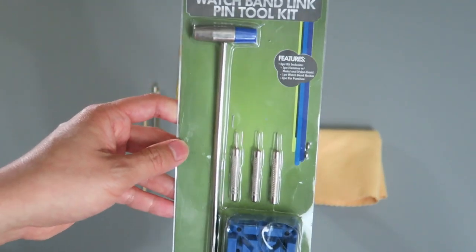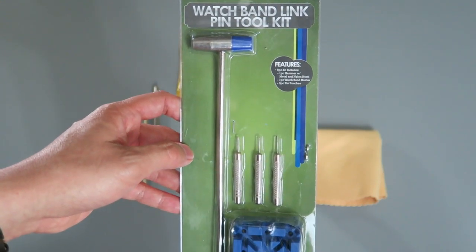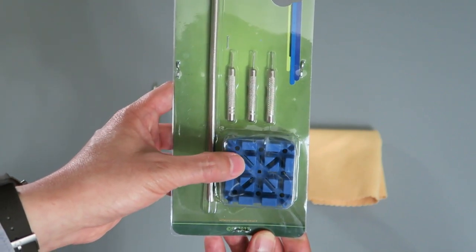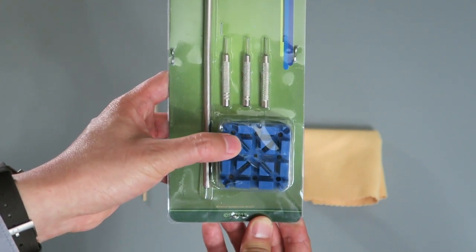Now here you can see something I haven't even used yet but it's a watch band link pin tool kit. I got this pretty cheap. I think it was under $10 on Amazon or eBay and I'll try to post links for all this stuff in the description field.